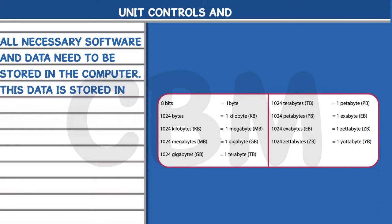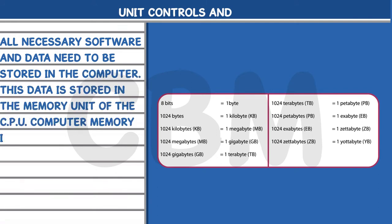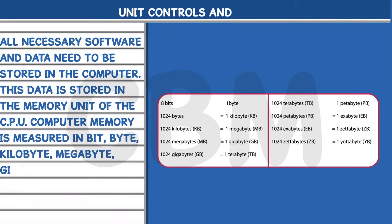The Memory Unit (MU): All necessary software and data need to be stored in the computer. This data is stored in the memory unit of the CPU. Computer memory is measured in bit, byte, kilobyte, megabyte, gigabyte, and terabyte.